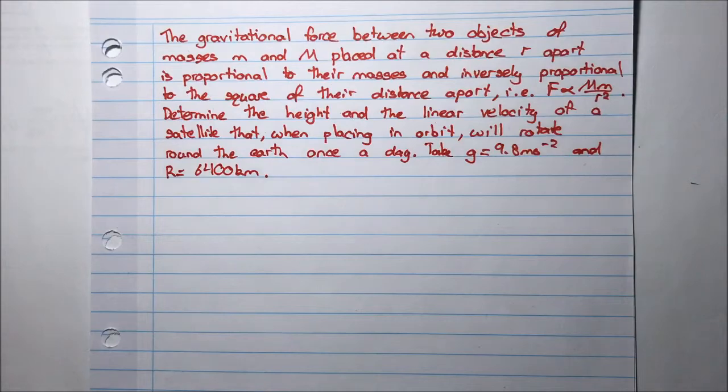That is, f is proportional to capital M times little m divided by r squared.